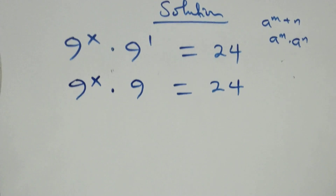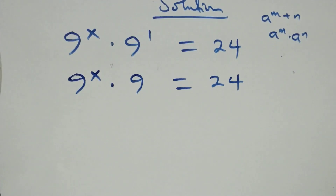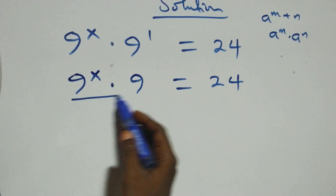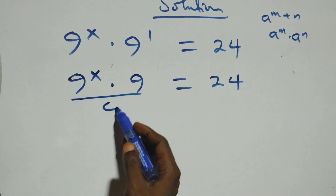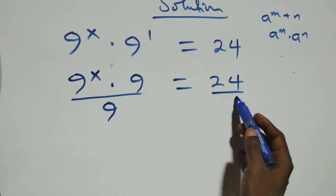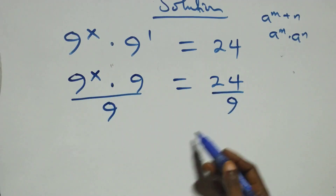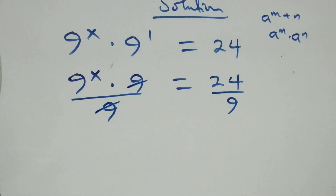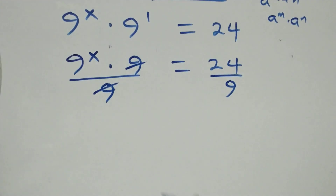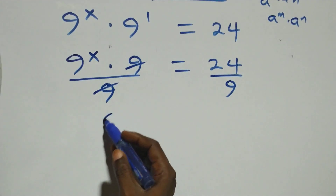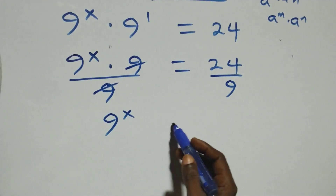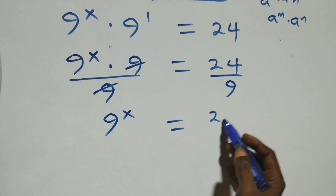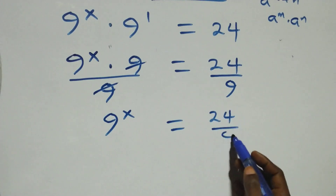The next step, we divide both sides by nine — divide this side by nine and also divide this side by nine. The nines cancel each other. We have nine raised to the power x left, which equals twenty-four over nine.